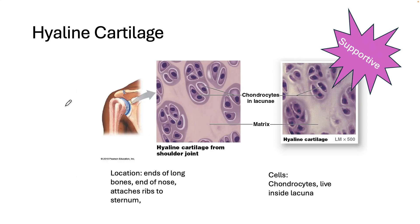Moving into the supportive category, the first type is hyaline cartilage. All cartilage contains lots of matrix, is more rigid than connective tissue proper, but still has some flexibility. The cells in cartilage are called chondrocytes, and they live inside little caves in the matrix called lacunae. Hyaline cartilage has a very smooth, almost glassy matrix, and is often found at the ends of long bones in joint cavities, creating a friction-free surface. This cartilage is weak, easily damaged, and because it has a poor blood supply, heals very slowly if at all.